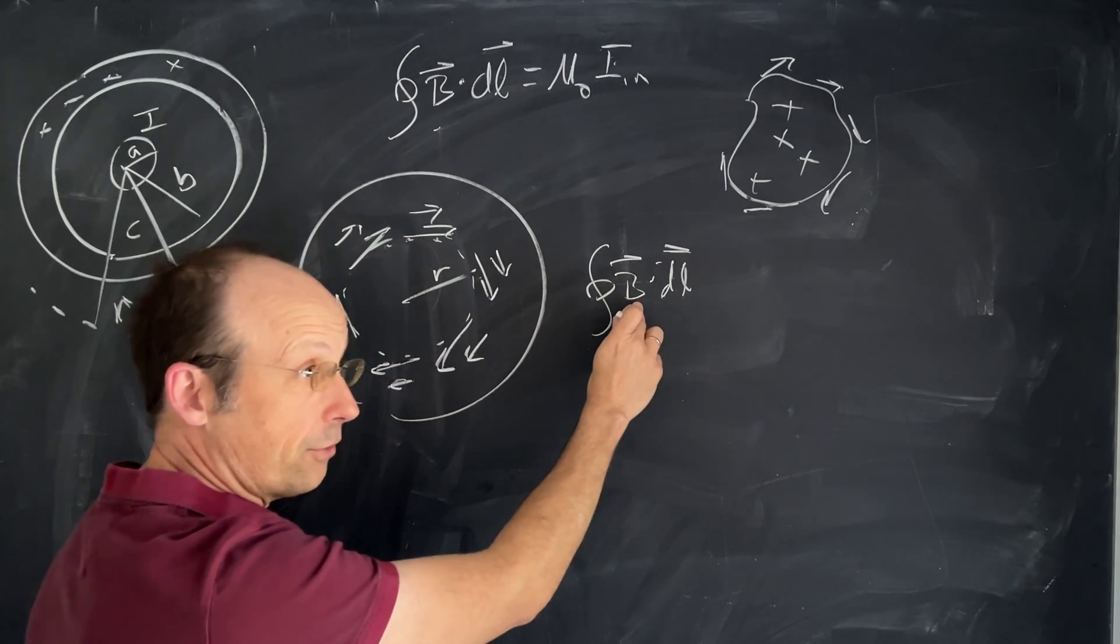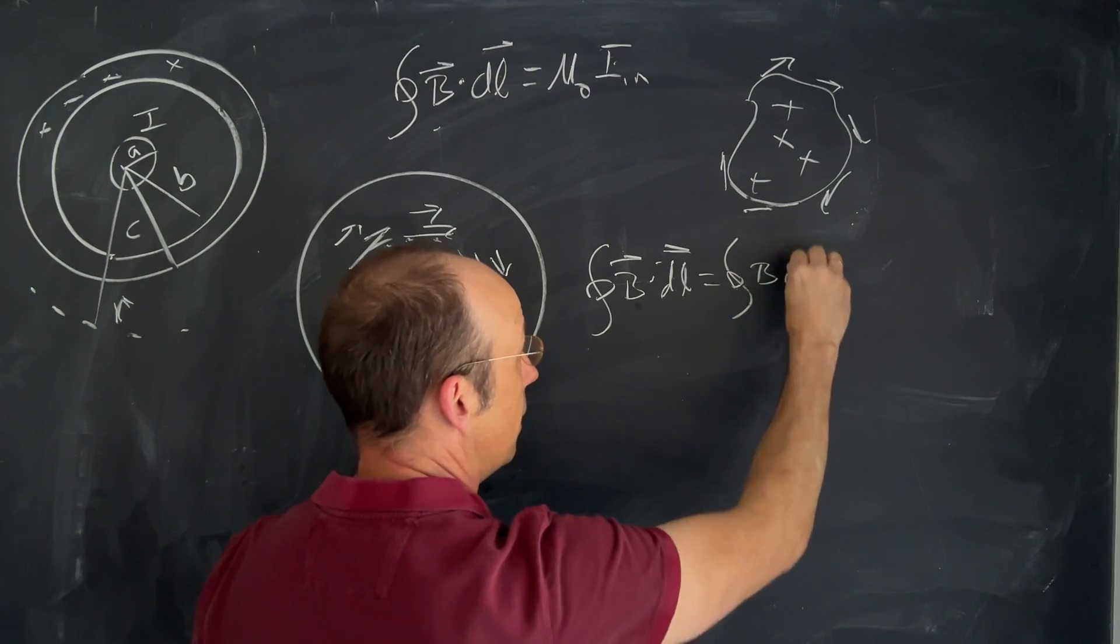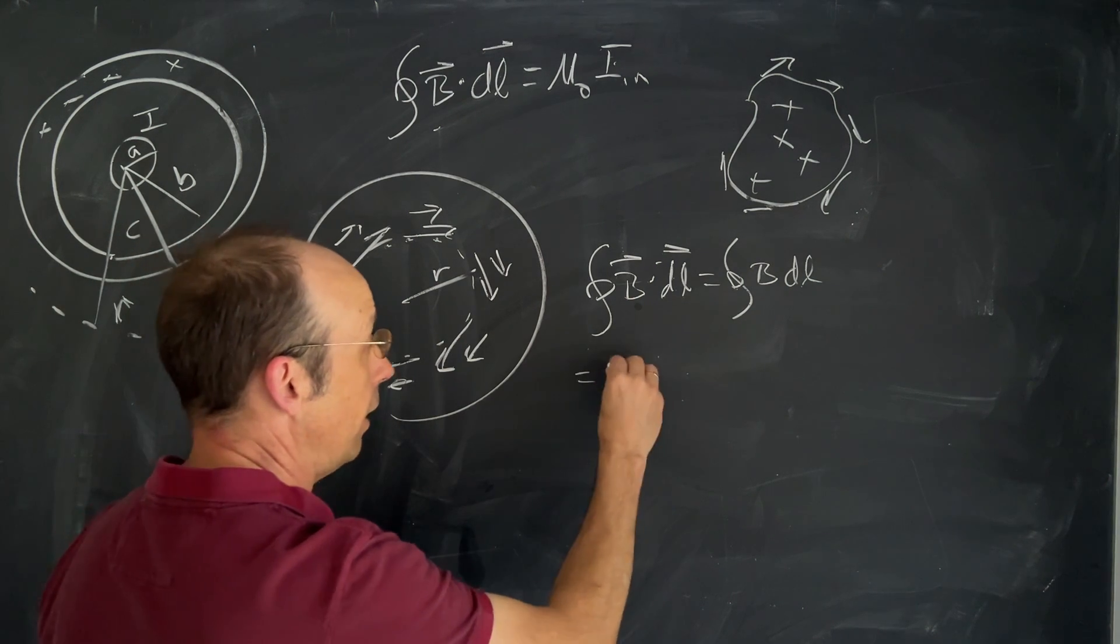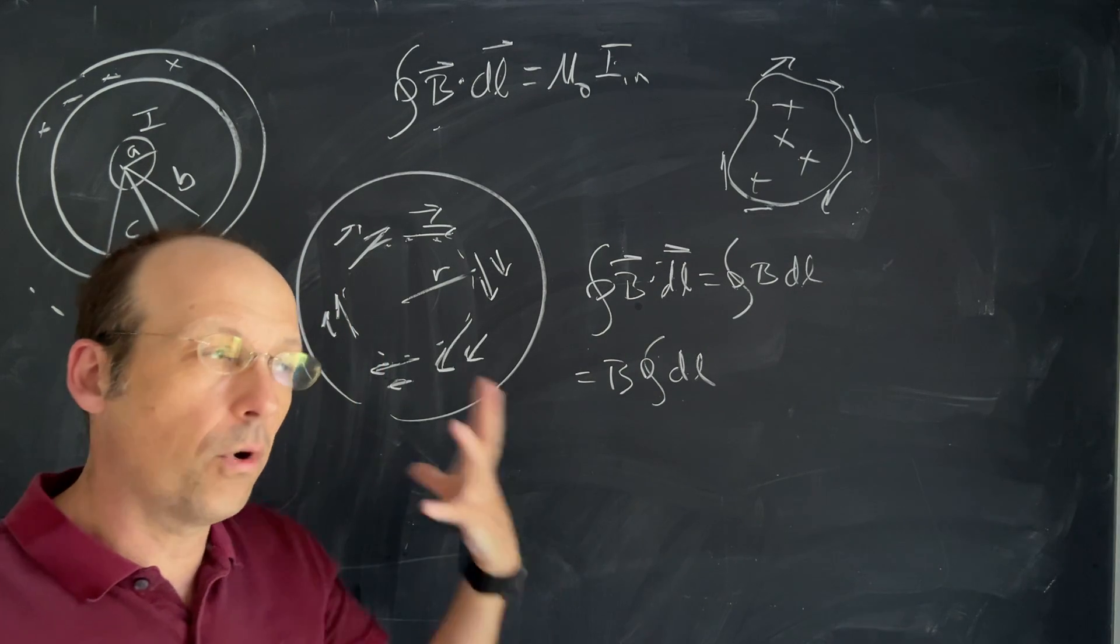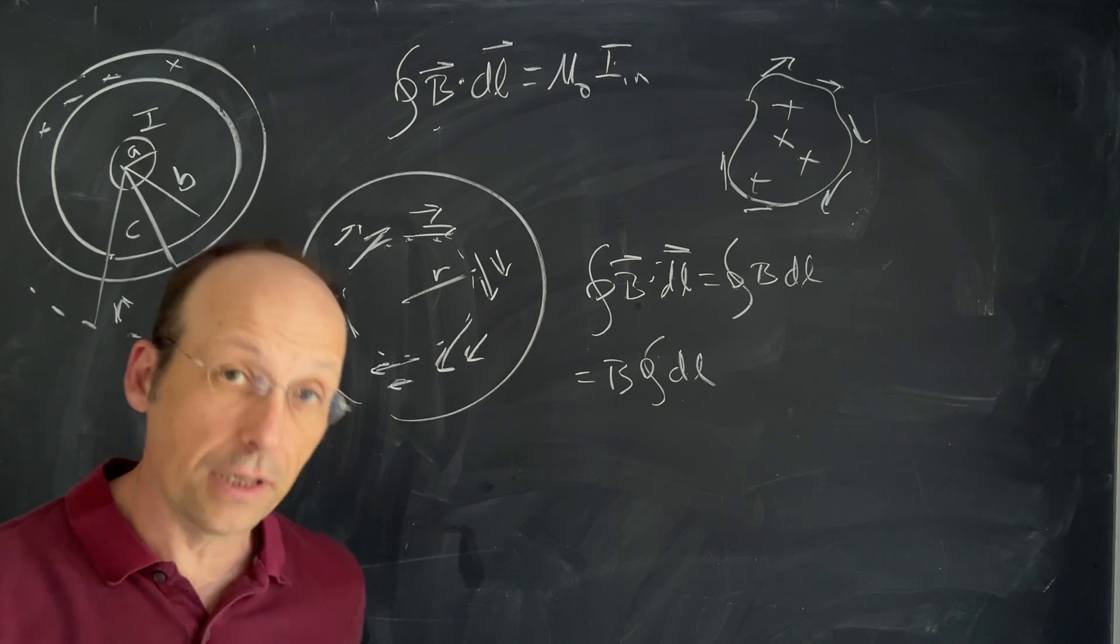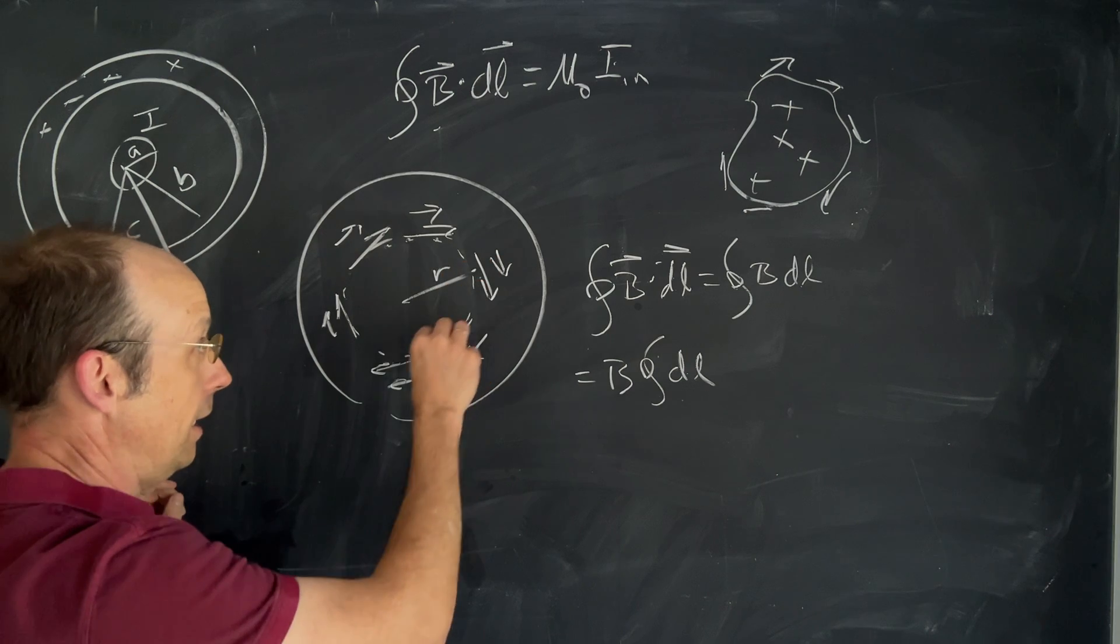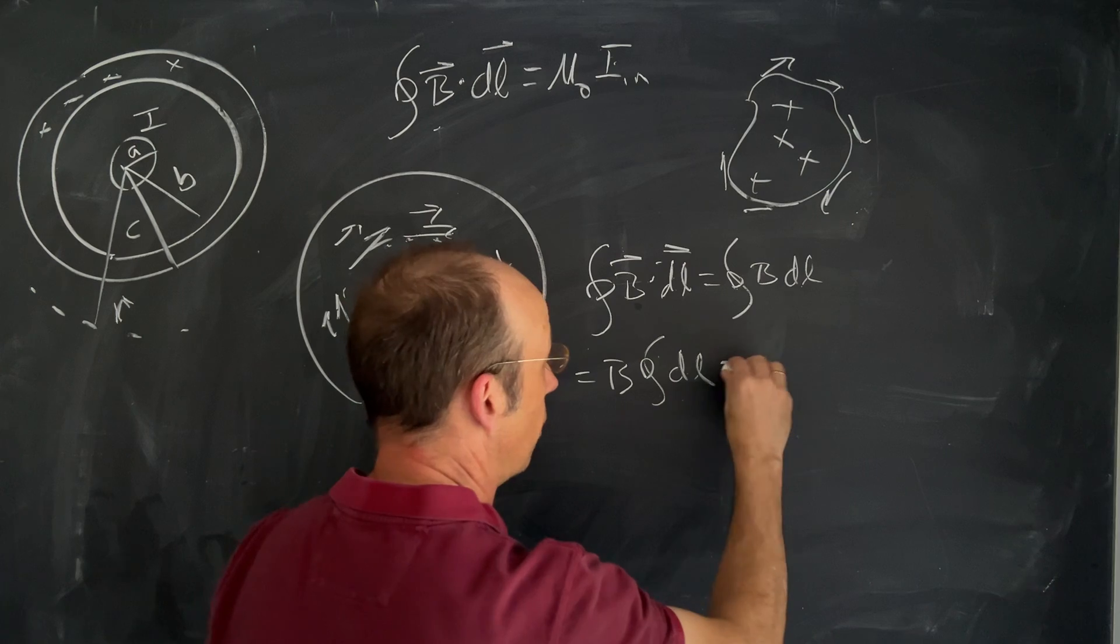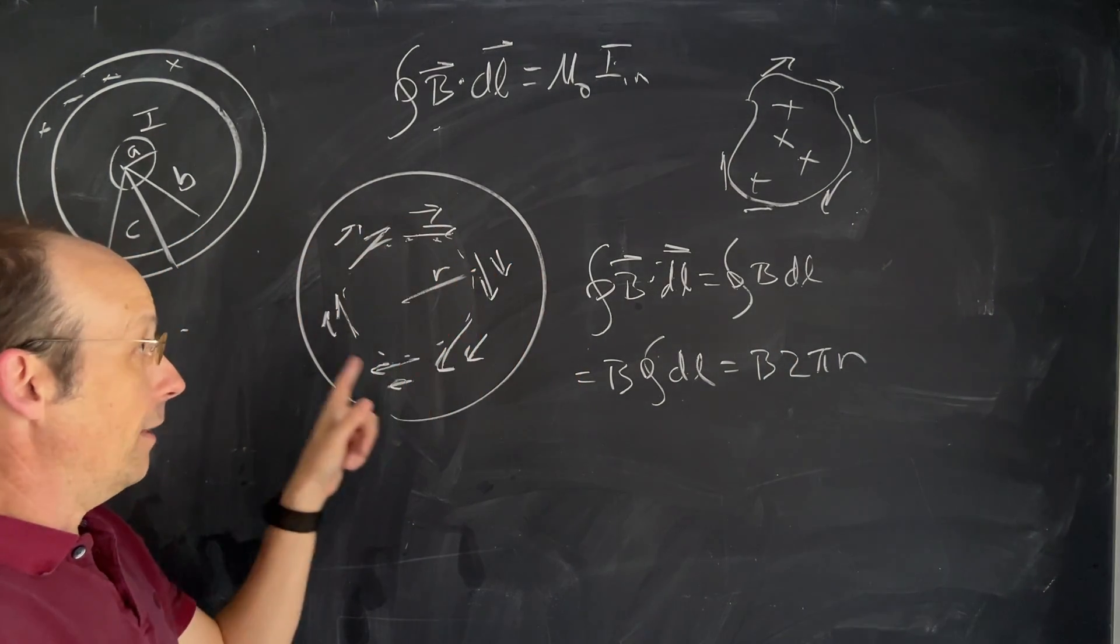The integral of B dot dL is a dot product between two vectors. If they're in the same direction, this is going to be B dL. And I've already said that the magnitude of B is constant. So I can write this as B times the integral of dL. We're not going to use Ampere's law except for situations that are trivially stupid. In this case it's trivially stupid because now I just have to integrate dL around a circular path. Well guess what? That's the circumference of a circle. So it's going to be equal to B times 2πR.